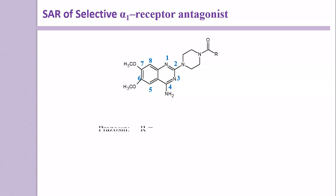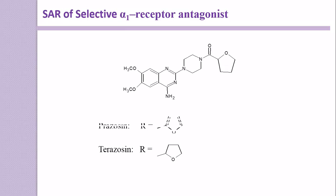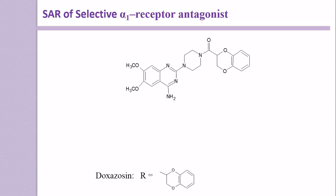If you replace the R with a furan ring, then the compound formed is Prazosin. Whereas, if there is a presence of a tetrahydrofuran ring, then the compound formed is Terazosin — here is the structure of Terazosin. Whereas, if R is a benzodiazine, then the compound formed is Doxazosin — here is the structure of Doxazosin.